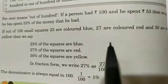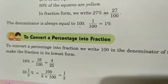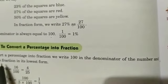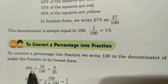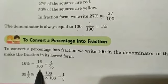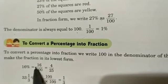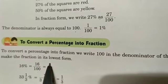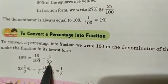I hope the concept of percent is clear now. We will understand how to convert a percentage into fraction. To convert a percentage into fraction, we write 100 in the denominator of the number and make the fraction in its lowest form. So here 16 percent is given. We write 16 by 100. Now we simplify: dividing by 4 gives 4 by 25. So 4 by 25 is the answer.